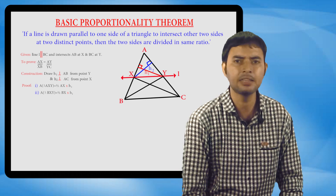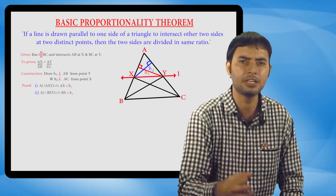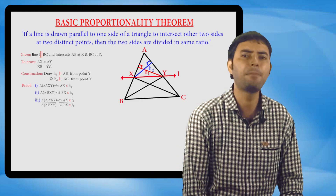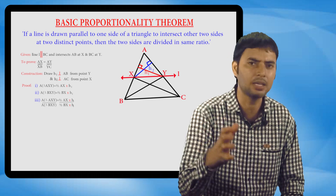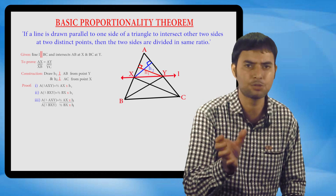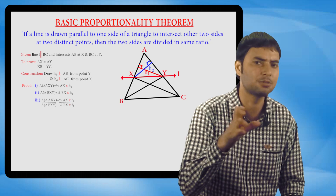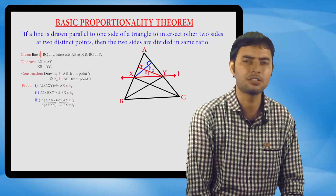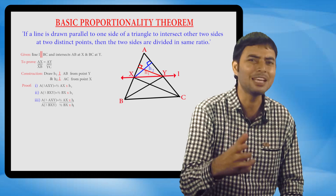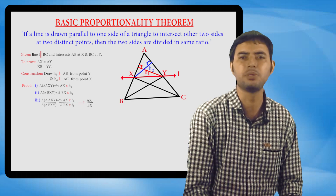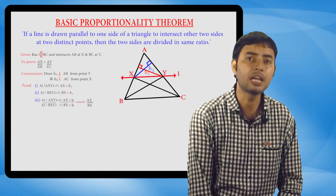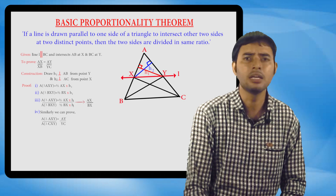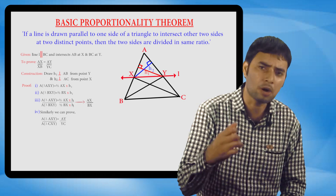To get the value of AX upon XB, we divide the first equation by the second. Area of triangle AXY upon area of triangle BXY equals half into AX into H1 upon half into XB into H1. The halves and H1 cancel, giving AX upon XB. Similarly, we can prove that area of triangle AXY upon area of triangle CXY equals AY upon YC.